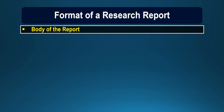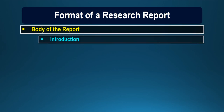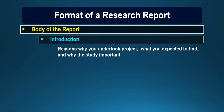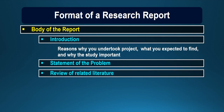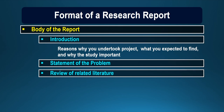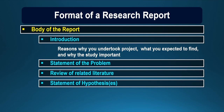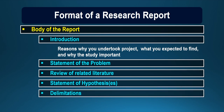So, an abstract or summary of the report is also written in a research report. Now let us come to the body of the report, where the first chapter is the introduction. This chapter describes the reasons why the investigator undertook the project or the study, what he or she expected to find, and why the study was important. It is followed by the statement of the problem, the review of literature, and a summary of that review. Based upon the review of literature, the investigator formulates the hypothesis. The research report also includes the delimitation of the study and the operational definition of the terms used.